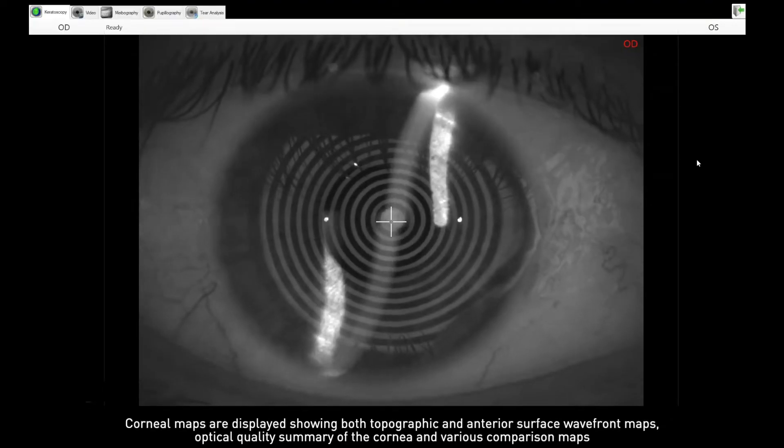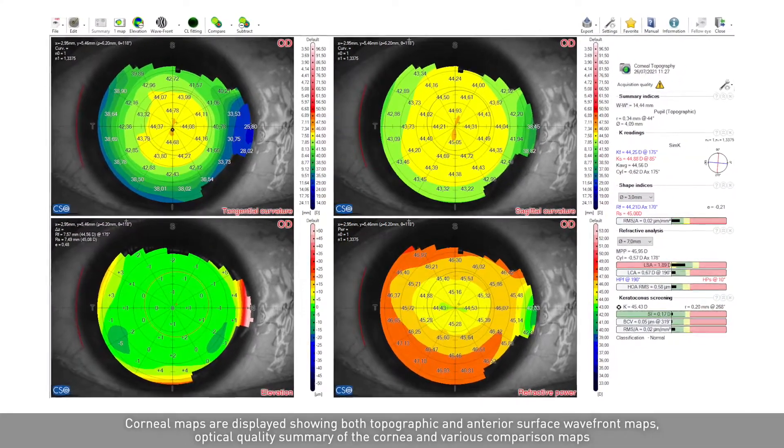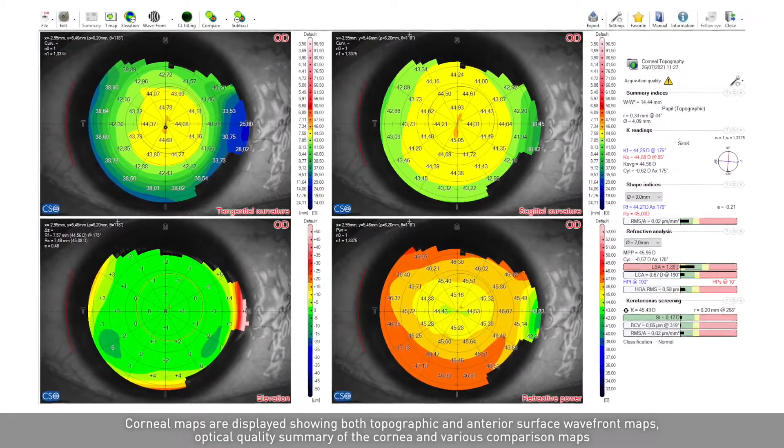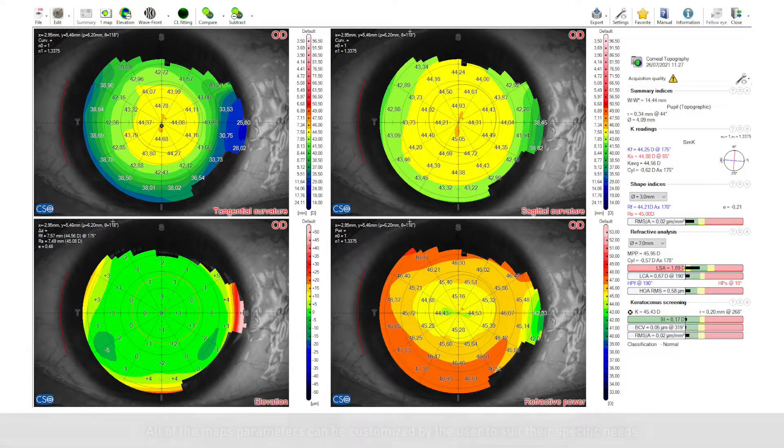Corneal maps are displayed showing both topographic and anterior surface wavefront maps, optical quality summary of the cornea, and various comparison maps. All of the maps' parameters can be customized by the user to suit their specific needs.